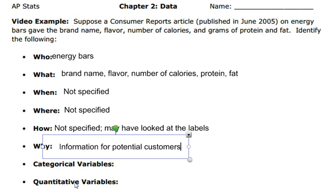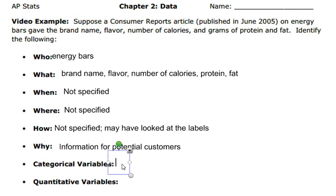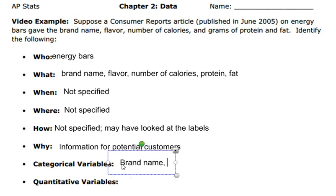The categorical and the quantitative variables come from the what. From the what, you're going to decide which ones are categorical and which ones are quantitative. Categorical variables can be put into categories — they don't have units. So in this example, our categorical variables would be brand name and flavor.